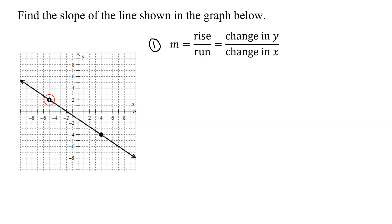If I need to get from this point to this point, I have to go down and then to the right. So let me draw that in. I need to go down to here, and then I have to go to the right. So to figure out my rise, I'm going down, so my rise is definitely a negative number. And how far did I go down? 1, 2, 3, 4, 5, 6. So my rise is negative 6.